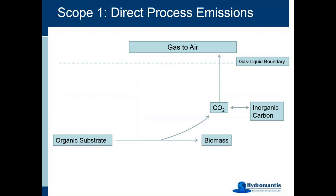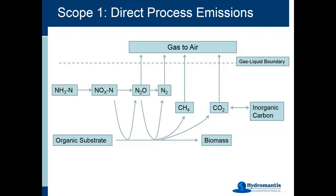Looking at scope 1 direct process emissions: in a biological reactor, organic substrates are converted into biomass, and some is mineralized producing CO2 that crosses the gas-liquid boundary into the air and is counted as an emission. In anaerobic reactors, organic substrates are converted to methane gas. For N2O production, ammonia gets nitrified, and from the denitrification process some N2O is generated, transported across the gas-liquid boundary, and emitted to the air. These are the simplified processes leading to CO2, CH4, and N2O in biological reactions.